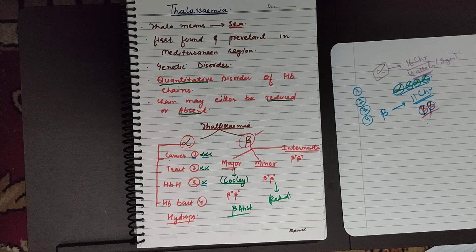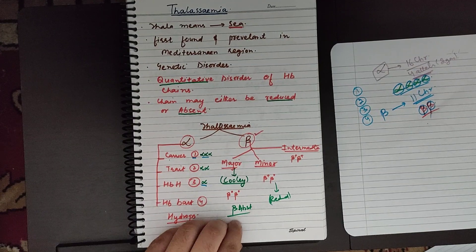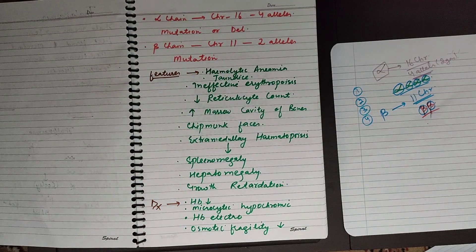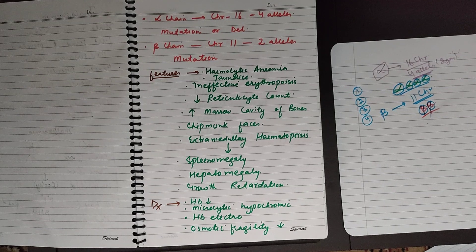HbBart's disease is also known as hydrops. HbBart's infants or fetuses usually die in utero — they die inside the womb of the mother because this is a very dreadful condition. Alpha chain genes are present on chromosome 16 with four alleles, and the defects can be produced by either mutation or deletion. Beta chain genes are on chromosome 11 with two alleles, and defects occur due to mutations.